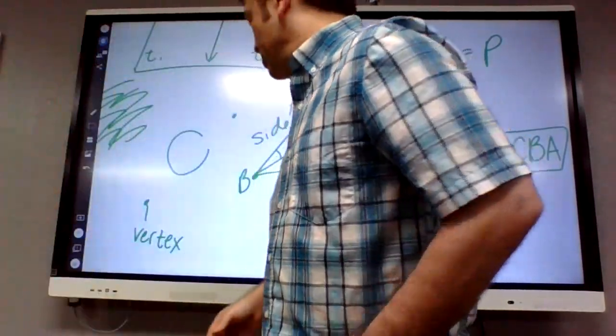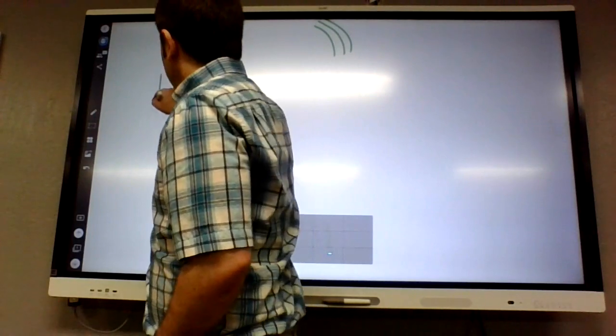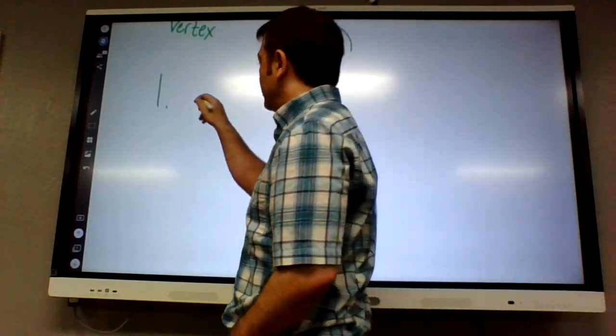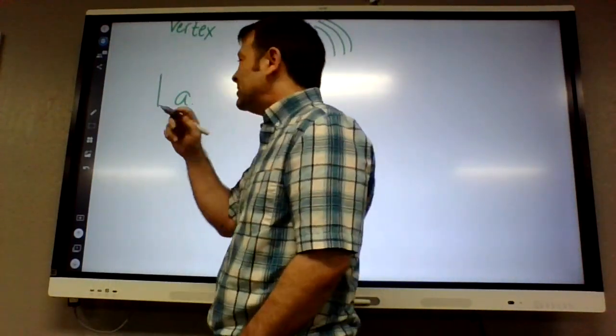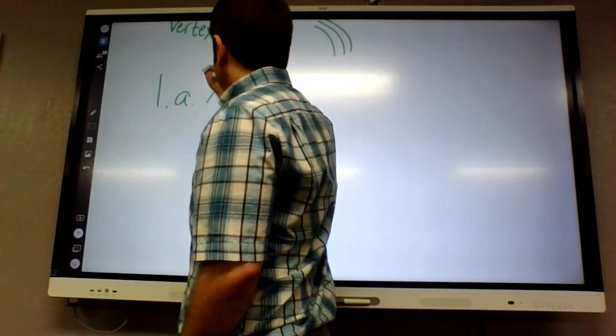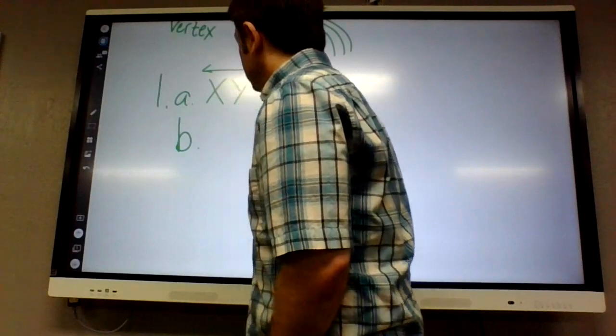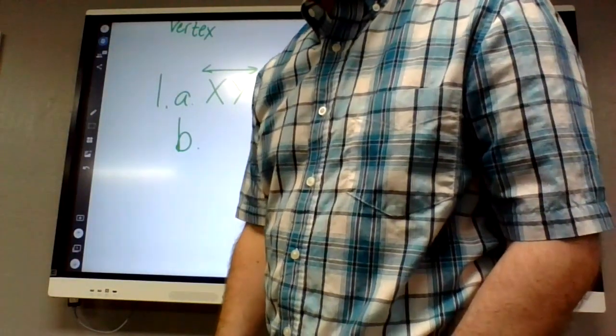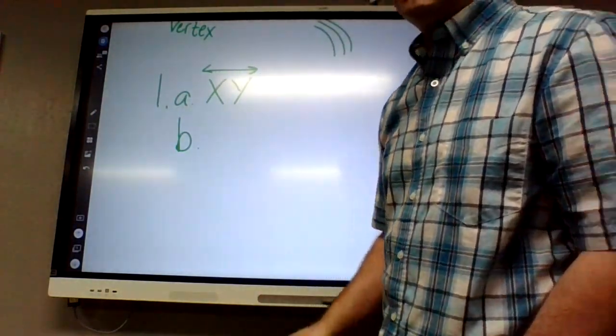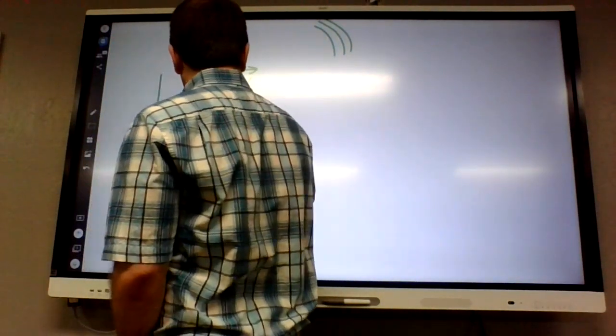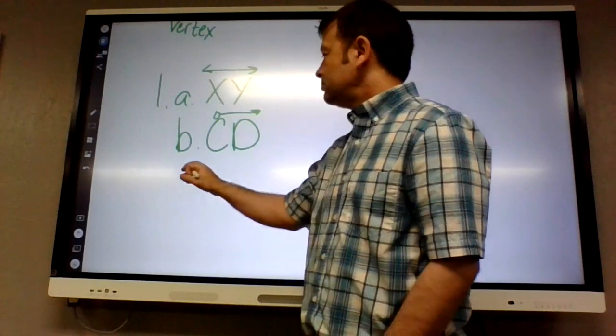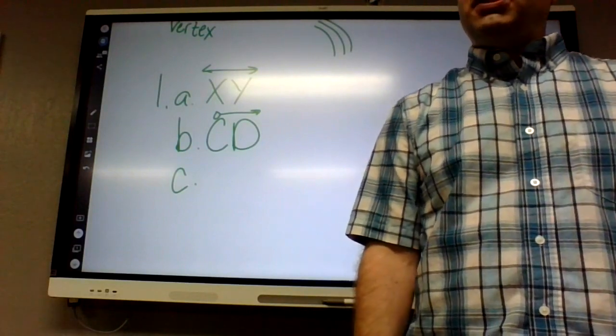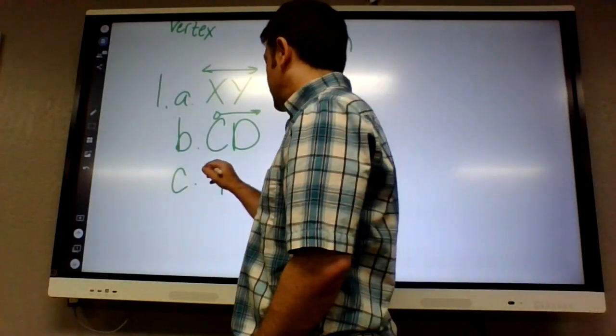Alright, so on number one it just says use proper notation to name the figure. So number one is a line, line XY with the line symbol. B, what is B? Half line, so it's going to be half line CD. So CD and then you just put the half line symbol on top. C is a ray. It would be ray TS. You got to start with the T because that's the endpoint.